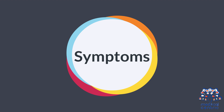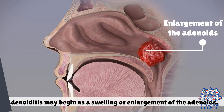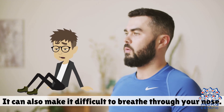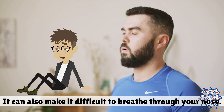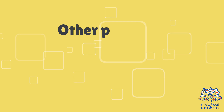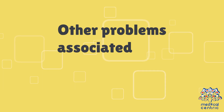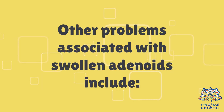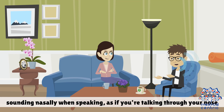Symptoms: Adenoiditis may begin as a swelling or enlargement of the adenoids. The swelling may block or restrict your airways. It can also make it difficult to breathe through your nose.